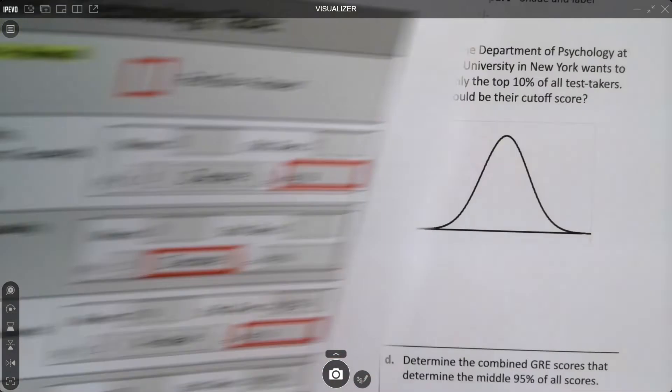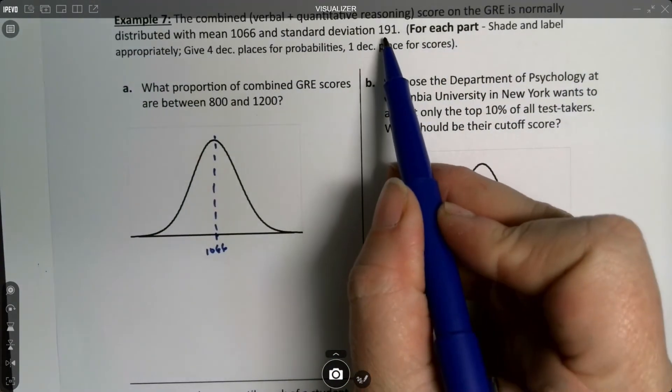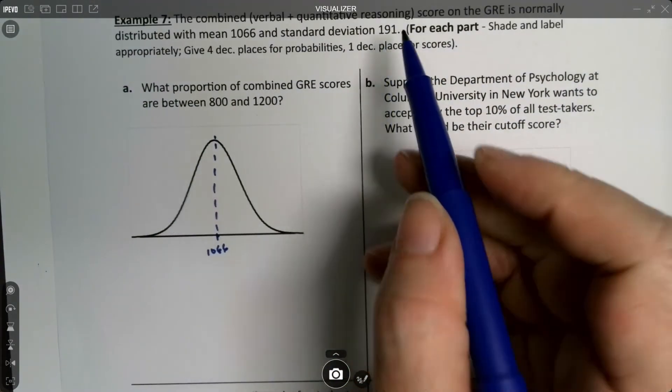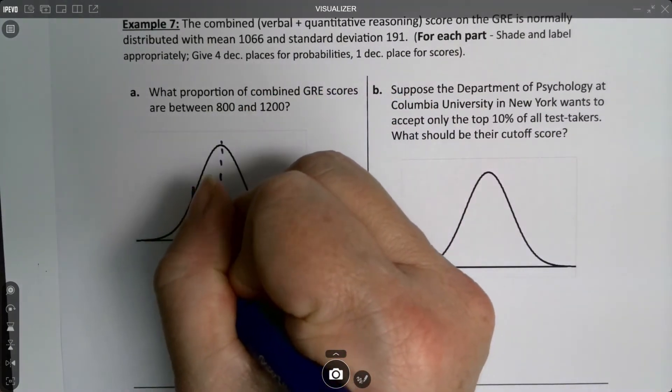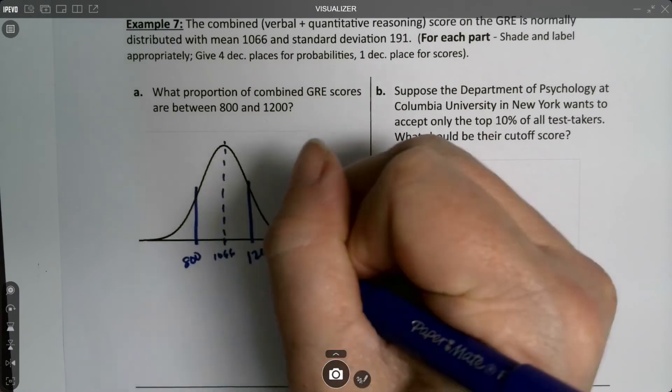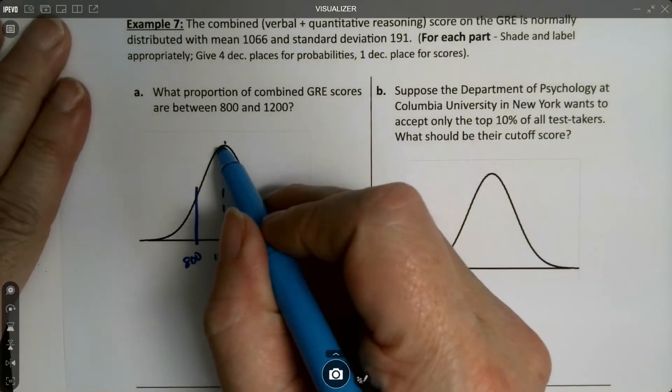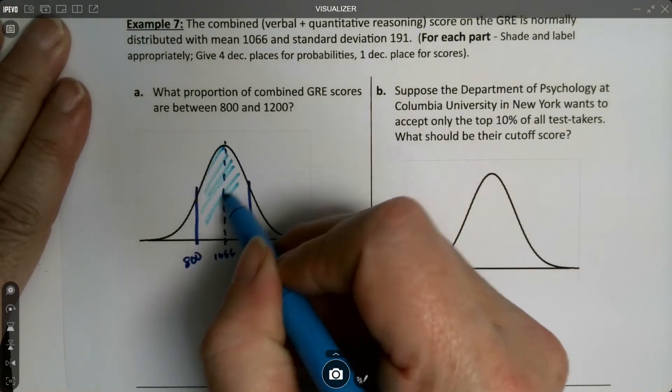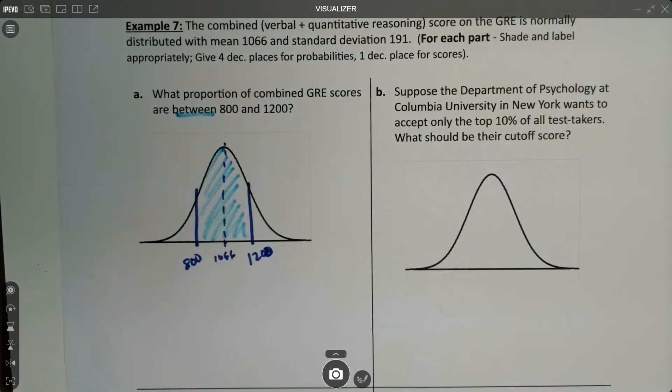I'm going to put in 800 over here. You figure a standard deviation is about roughly 200, so 800 is kind of over here. 1200 is over here. If you're working in pencil and you do it wrong you can always adjust because StatCrunch shows you a picture of what it looks like. You want to go between because it said between. So I'm going to shade between them.